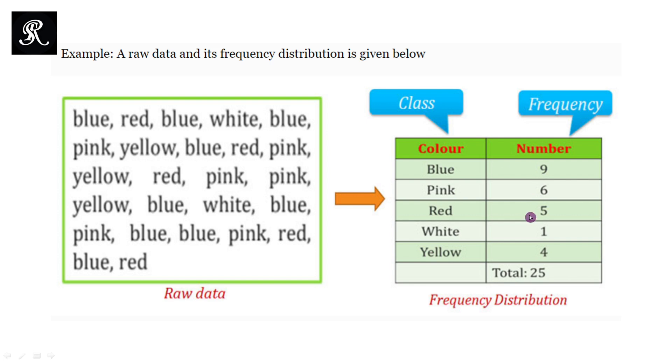In the second column, we are given the frequency - how many times appears this blue color. So here you can see that we have one blue color here.